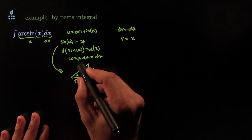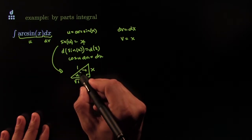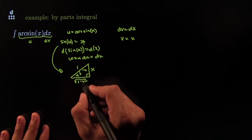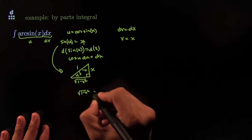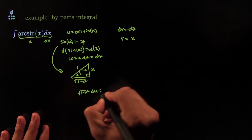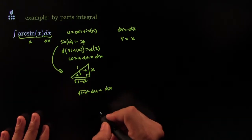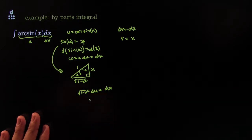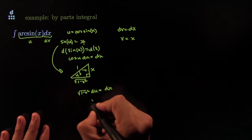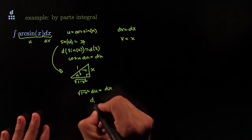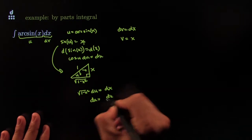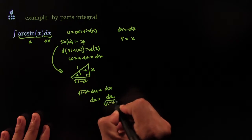That forces this one to be 1 minus x squared by using Pythagorean theorem. From here I gather that cosine u, cosine u would be this ratio. So cosine u would be equal to square root of 1 minus x squared times du is equal to dx. Or said differently, du is equal to dx all over the square root of 1 minus x squared.